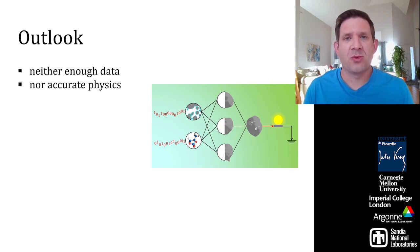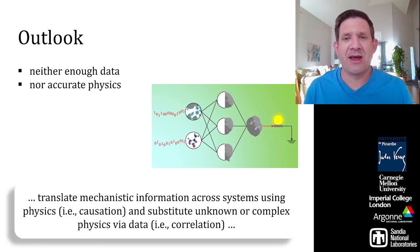Instead, revolutionary scientific machine learning applications will judiciously combine our knowledge of physics with abundant data. Here, physics translates to mechanistic information, i.e. causation, while data substitutes unknown or expensive physics with correlations. We are excited to see what breakthroughs scientific machine learning brings to electrochemical sciences.